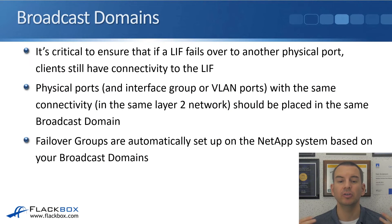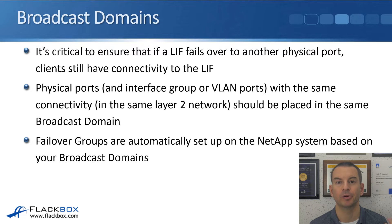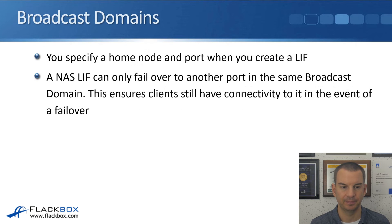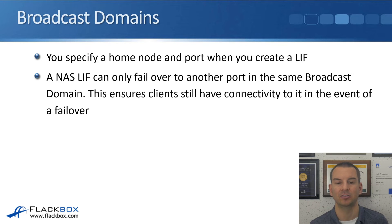It's critical to ensure that if a LIF fails over to another physical port, interface group, or VLAN interface, clients still have connectivity to that LIF and its IP address. Physical ports and interface group or VLAN ports with the same connectivity — meaning they're in the same Layer 2 network — should be placed in the same broadcast domain. Failover groups are automatically set up based on your broadcast domains, and a NAS LIF can only failover to another port in the same broadcast domain.